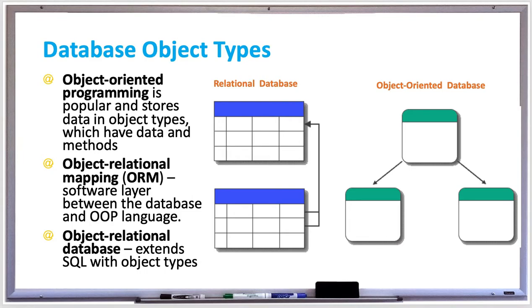A car object has data that's defined by the class, such as the make, model, year, color, the number, and so on for the car.